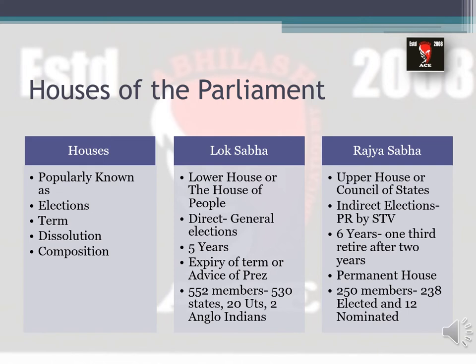Regarding composition: Lok Sabha is a larger house with a total of 552 members — 530 elected from states, 20 from union territories, and 2 Anglo-Indians nominated by the President to represent the Anglo-Indian community. In Rajya Sabha, there are a total of 250 members, out of which 238 are elected and the remaining 12 are nominated by the President from different areas of specialization such as literature and science.